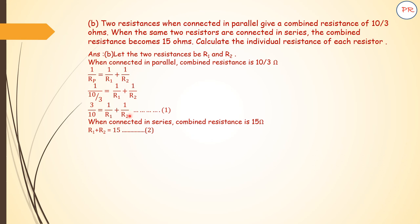In parallel, the reciprocals get added up, whereas in series they get added directly. Equation 1 becomes 3 by 10 equals R2 plus R1 divided by R1 R2. R2 plus R1 we can write as 15. So 3 by 10 equals 15 by R1 R2. Cross multiplying, we get 3 times R1 R2 equals 150. That is, R1 R2 equals 50.